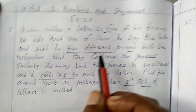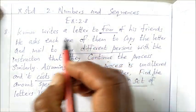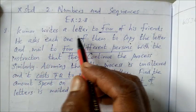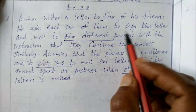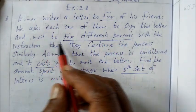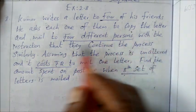This is 10th standard second unit, numbers and sequences, exercise 2.8. Kumar writes a letter to four of his friends. He asks each one of them to copy the letter and mail to four different persons with the instruction that they continue the process similarly.